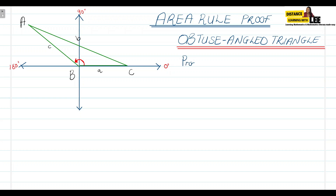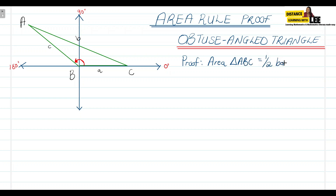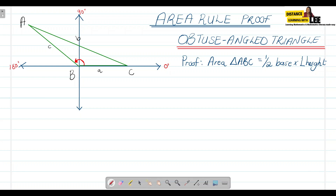The area of triangle ABC is equal to half the base multiplied by the perpendicular height. In this case, we do not have a perpendicular height, so that is where we now start to do our constructions. We're going to put our perpendicular height here and call this line AD.